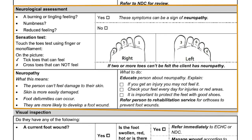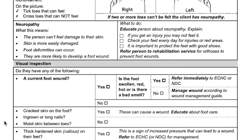Following this is the neurological assessment. Ask the person the appropriate neurological assessment questions and complete the sensation test. There is a video on the sensation test for more information. This will explain what you have found, and it is important to educate the person and their family about neuropathy and explain each of the steps. An appropriate referral may be required at this section.